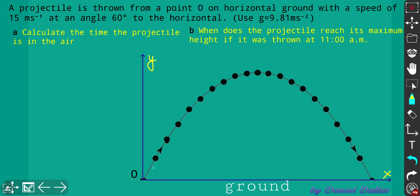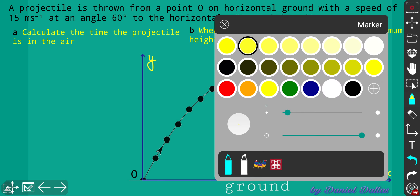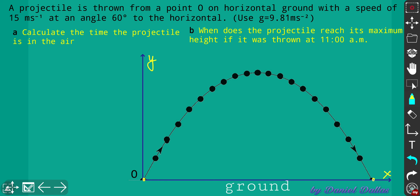Here is the problem: a projectile was thrown at a speed of 15 metres per second at an angle of 60° to the horizontal. We use g = 9.81 m/s², which is acceleration due to freefall. First, we need to calculate the time the projectile is in the air — from the starting point O to the final point when it lands. During that time it covers the maximum range, so we need to set up a formula to figure out the time.